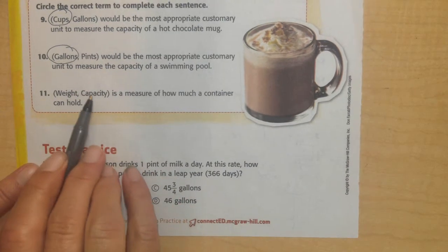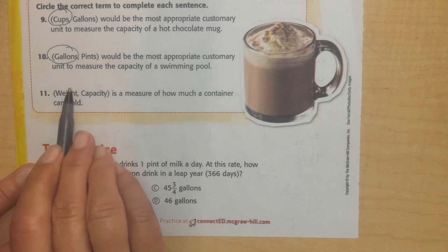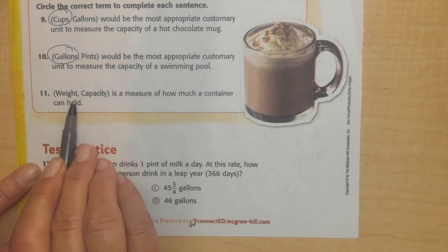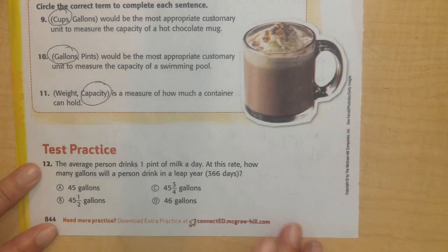And weight or capacity is measuring how much a container can hold. When I do weight, it tells me the mass, how heavy it is. The capacity tells me how much it can hold.